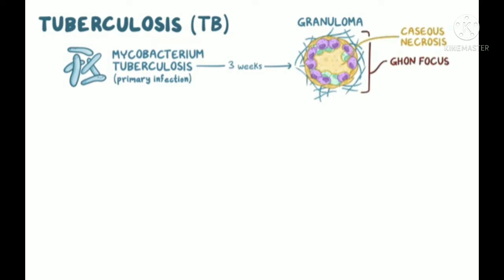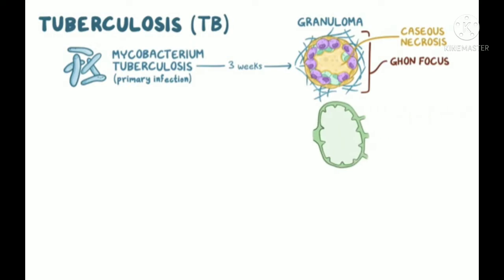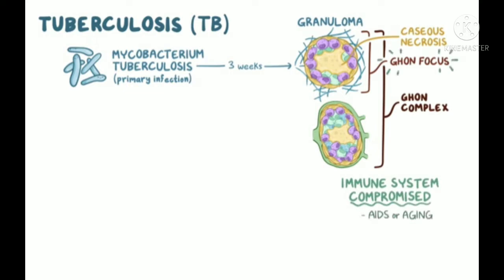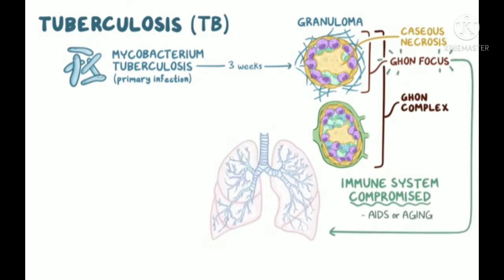TB also extends to nearby hilar lymph nodes, causing caseous necrosis there as well. The Ghon focus plus the affected lymph node makes up the characteristic Ghon complex. If the immune system becomes compromised, like with AIDS or older age, the Ghon focus can reactivate, and the infection can spread to one or both upper lobes of the lungs, where it forms cavities.